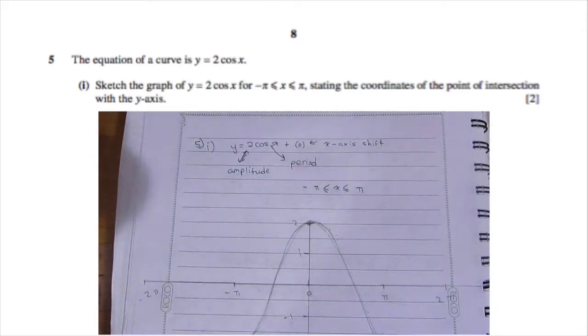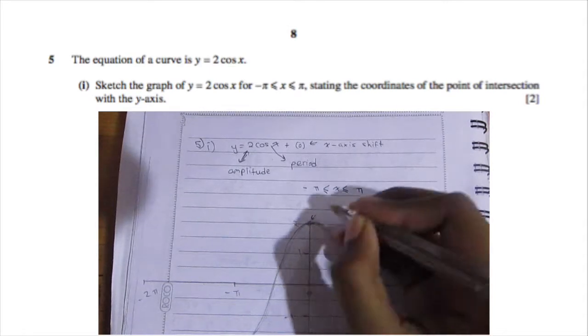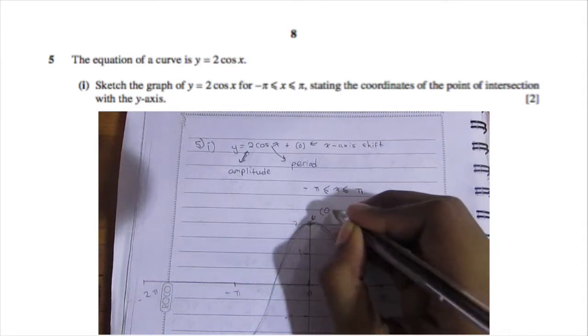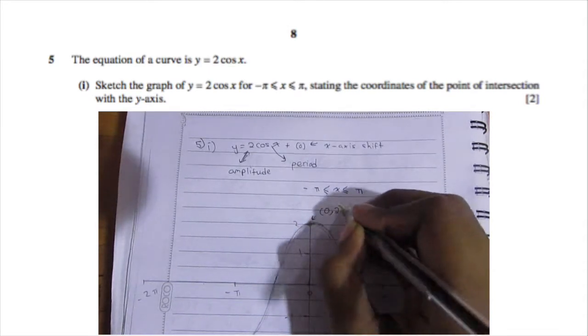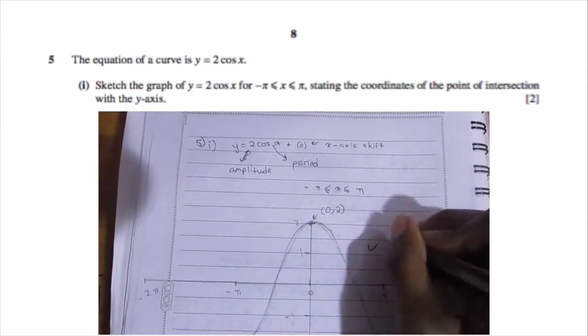That's all you had to do for this part — sketch the curve and find the point of intersection with the y-axis, which is (0, 2). That is a total of two marks.